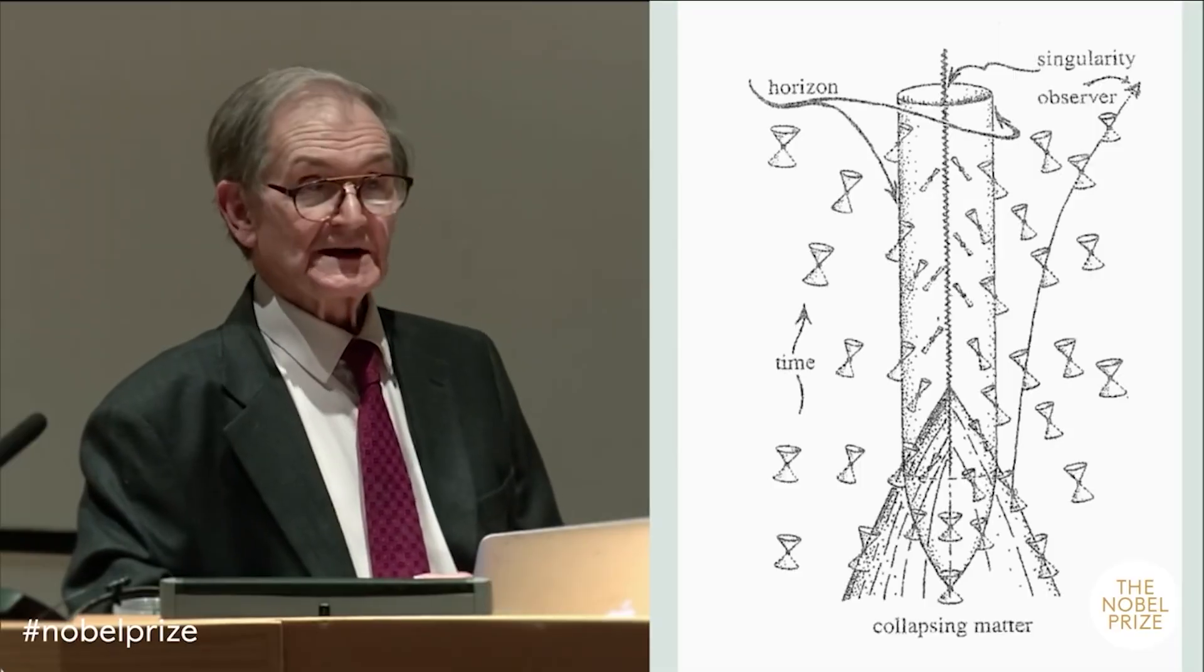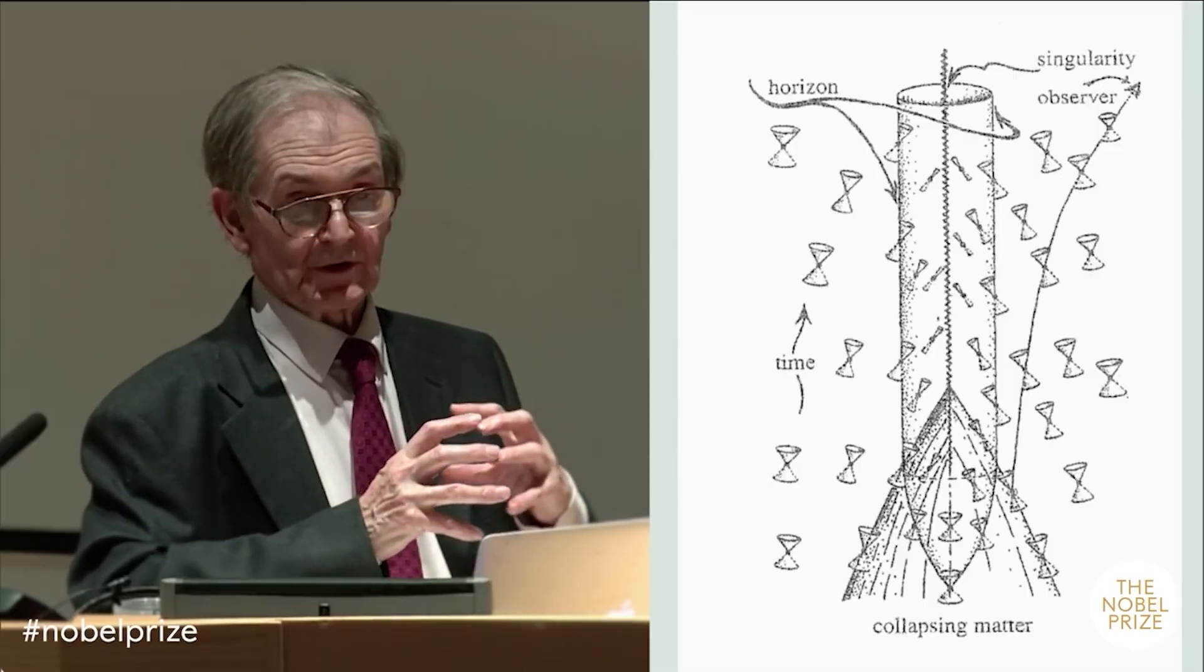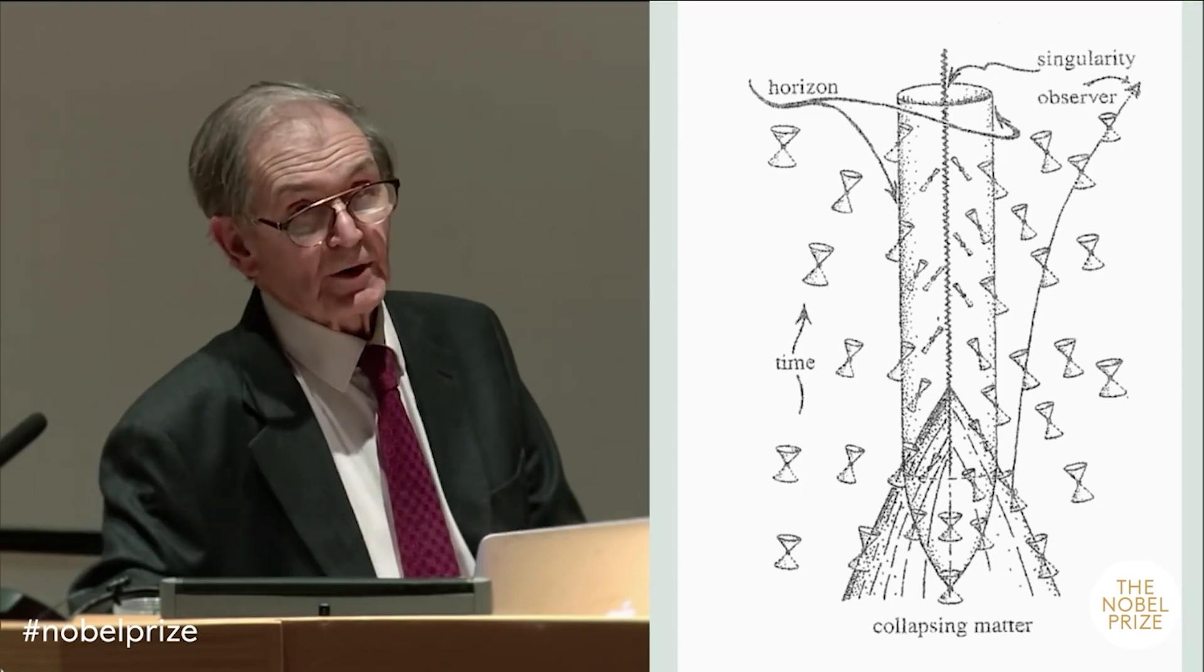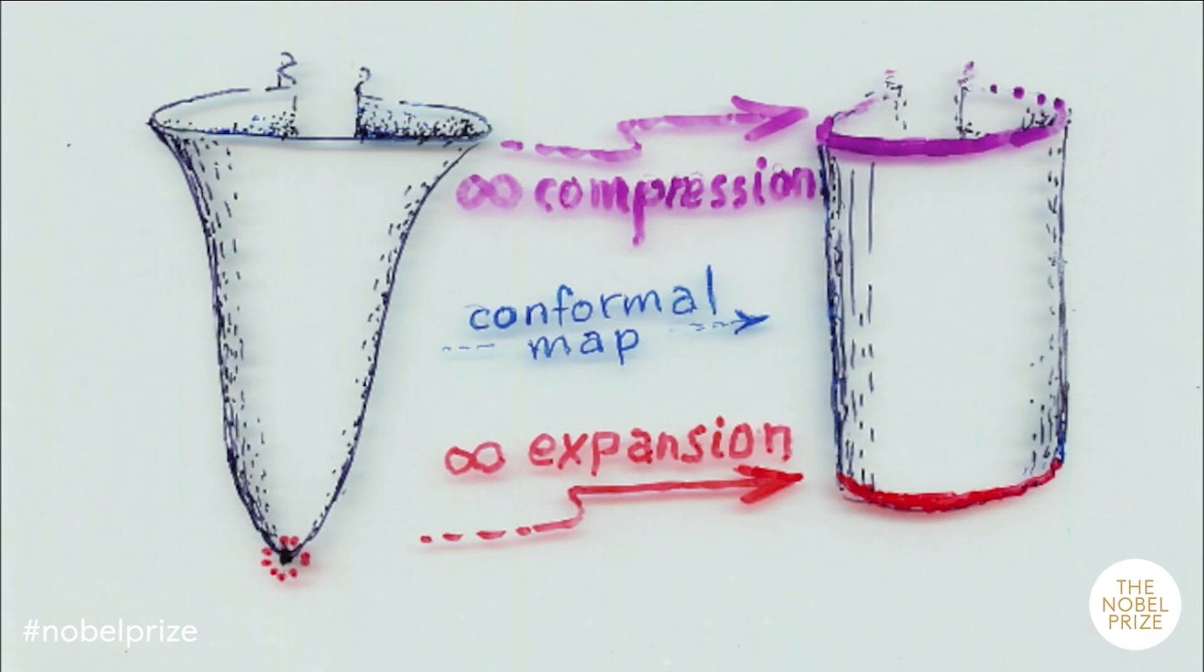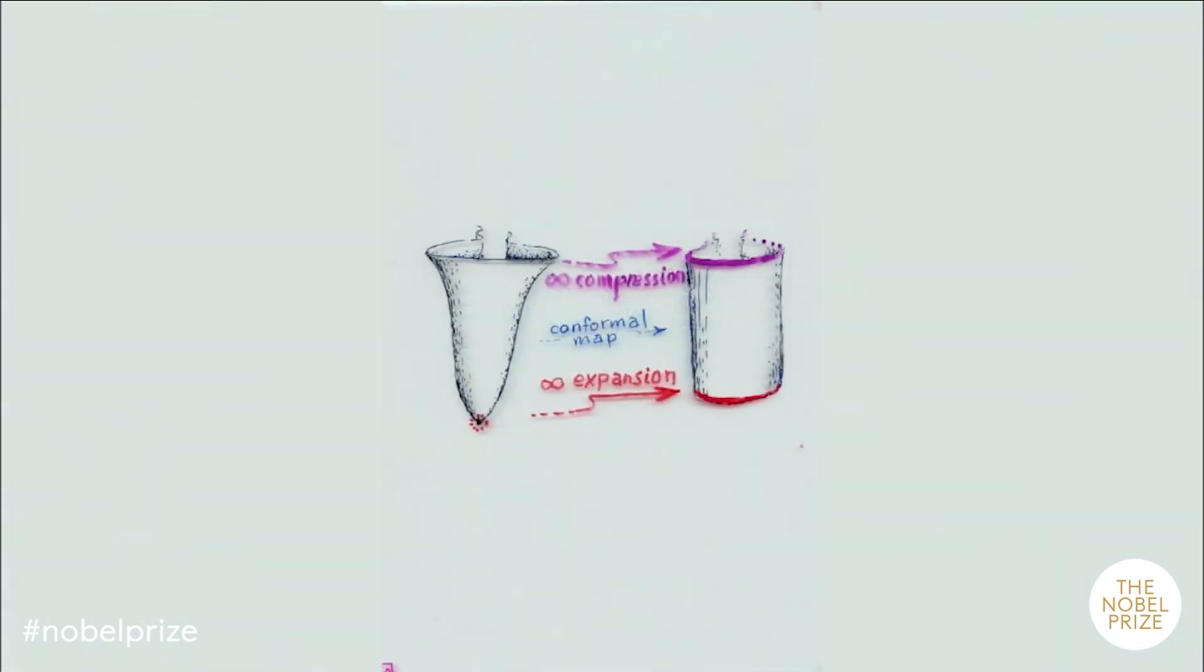In his victory speech, Penrose reiterated his faith in what he termed a crazy theory of mine, that the cosmos would expand until all matter eventually breaks down. Then, another Big Bang will create a whole new universe.